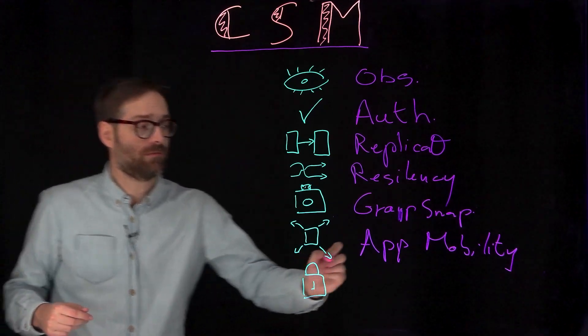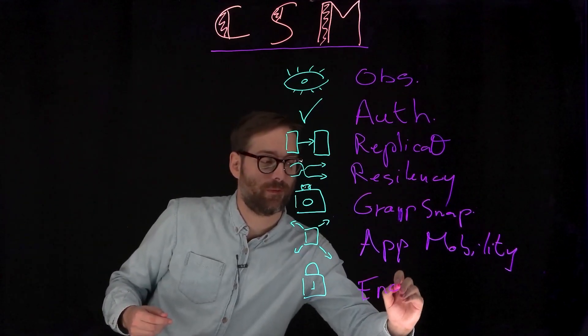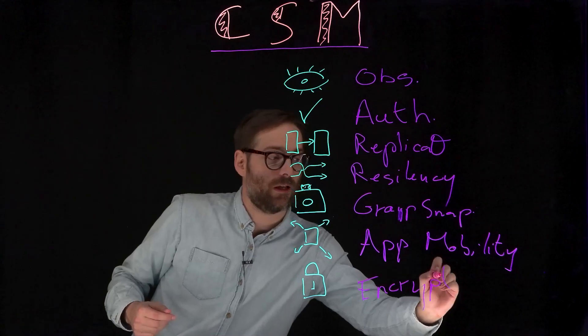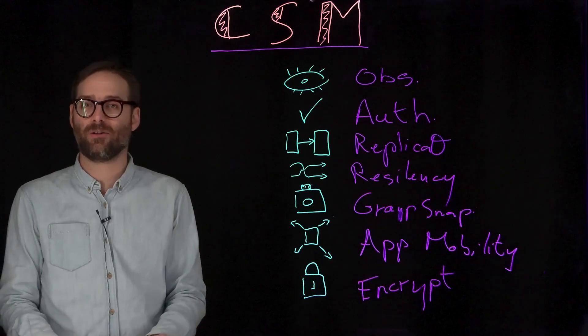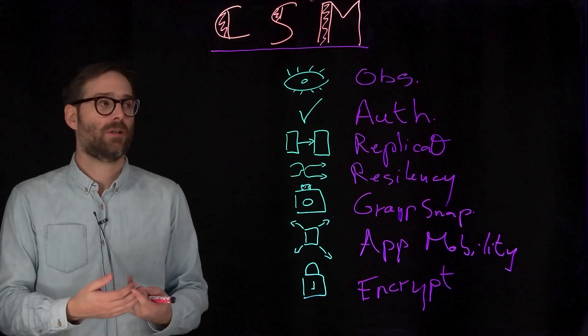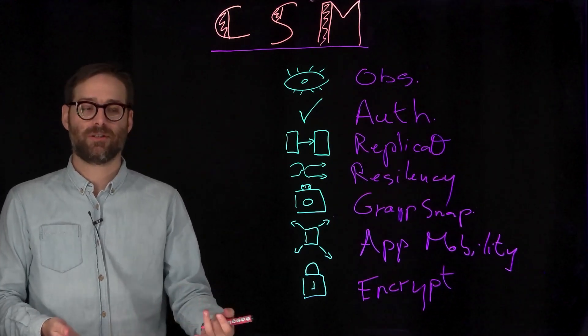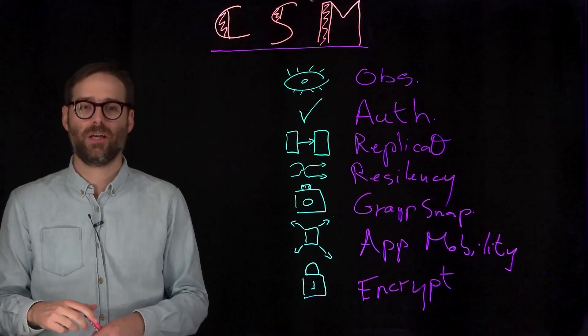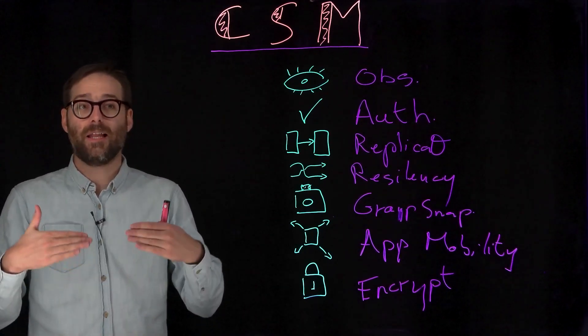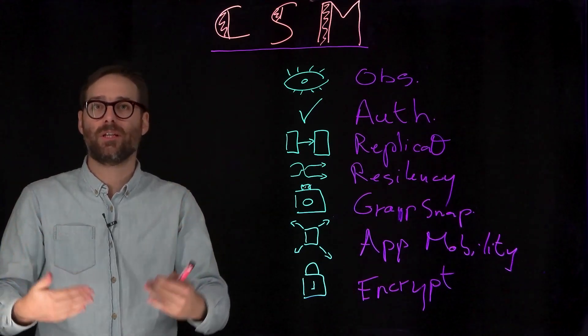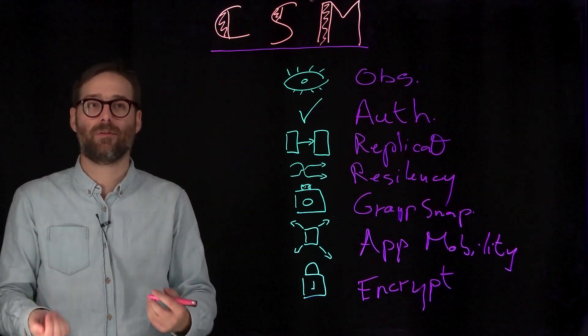The last one deals with encryption. That module, once enabled, offers the capability to have on-the-fly encryption for your pods. Basically, upon pod startup, we're going to gather a key within HashiCorp Vault or any kind of encrypted database. And everything that's going to be written to disk by the pod will be ciphered on-the-fly.